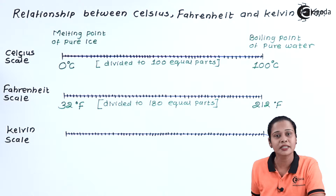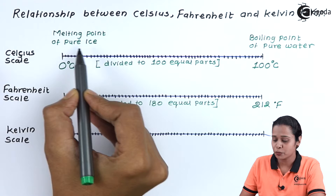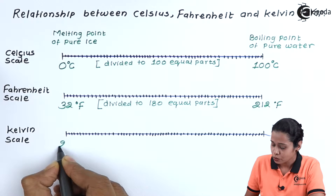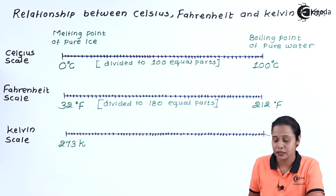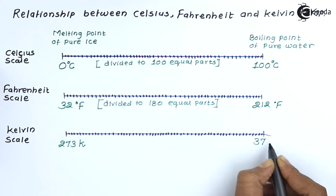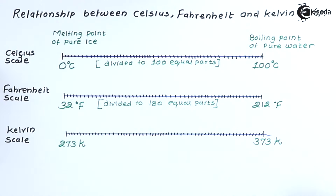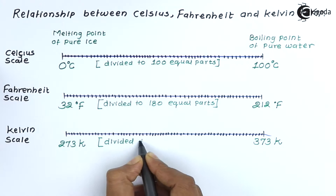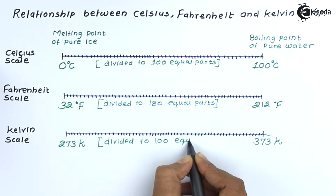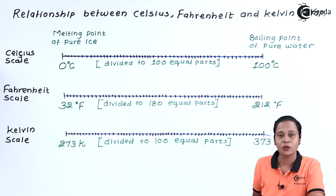The third one is the Kelvin scale. On the Kelvin scale, the melting point of pure ice is 273 Kelvin, and the boiling point of pure water is 373 Kelvin. This scale is again divided into 100 equal parts.